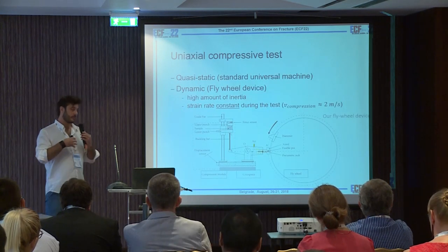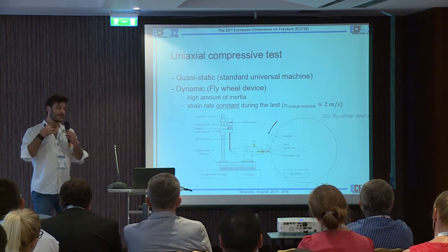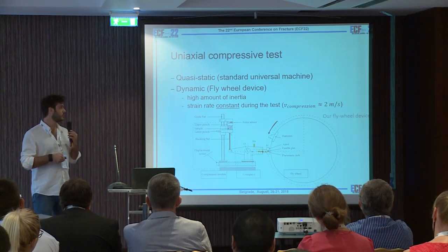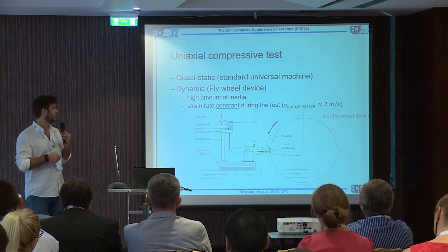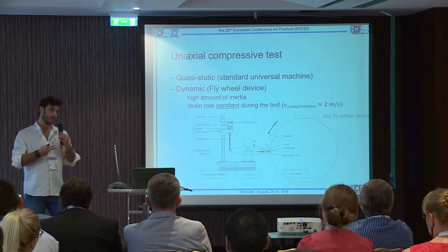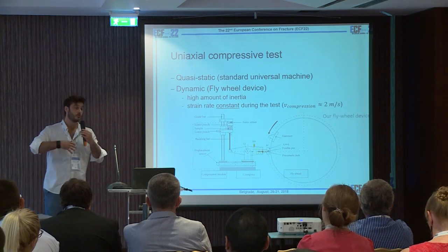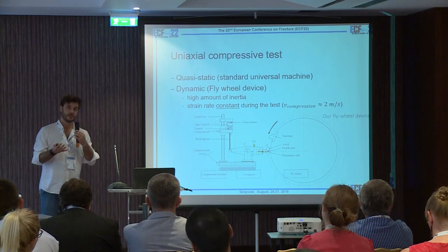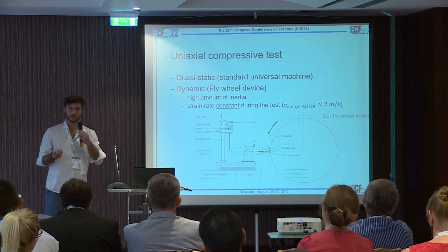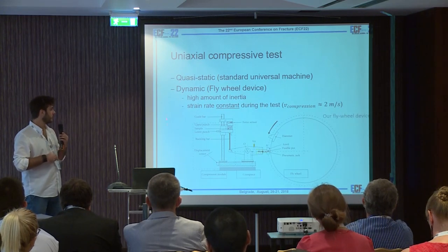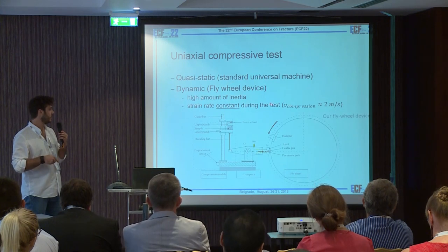As we cannot initiate artificially a crack, we chose two types of loadings — one quasi-static and one dynamic — in order to put two different elastic energies in the structure before the crack propagation. The first one was a standard compressive machine, and the second one was a dynamic compression machine built in our laboratory, called the flywheel device.